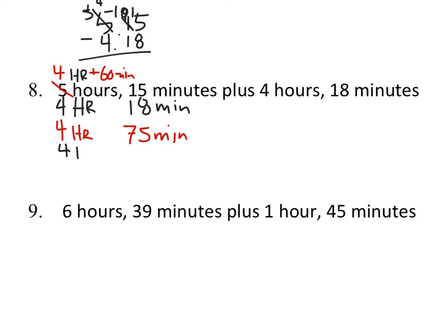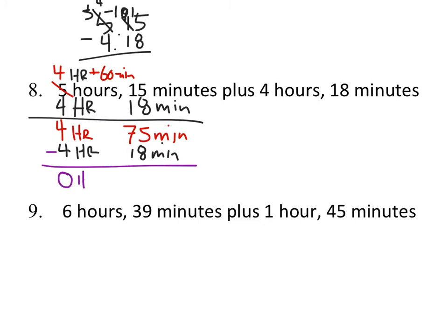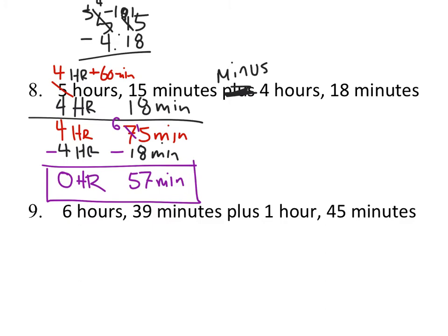After rewriting the problem: 4 hours minus 4 hours is zero, and 75 minus 18 equals 57 minutes. So the answer is 57 minutes. If we were adding instead of subtracting, the result would have been 9 hours 33 minutes.